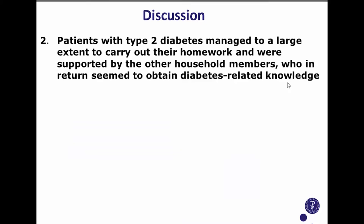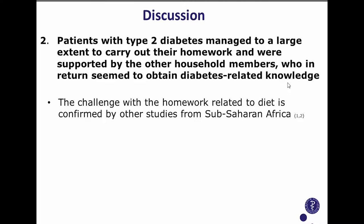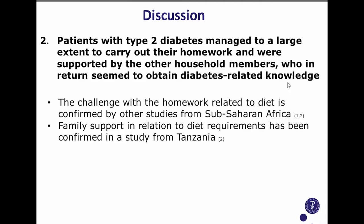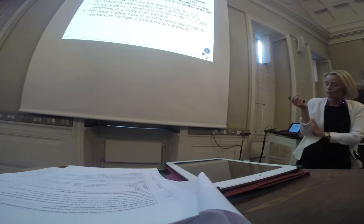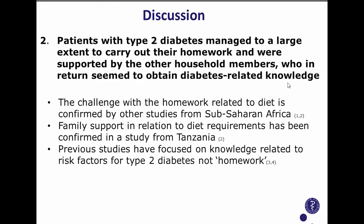Regarding homework in sub-study 2: our patients found that the diet regimen required for diabetes management was the hardest to carry out, which aligns with other studies from sub-Saharan Africa. We also saw that family support was most often related to diet requirements. Previous studies finding that family members may have higher knowledge when living with someone with type 2 diabetes have focused mostly on risk factors for diabetes, not on areas related to diet and physical activity.